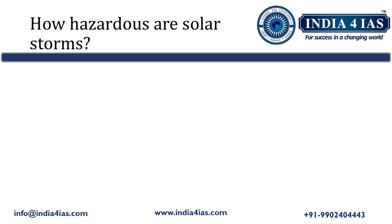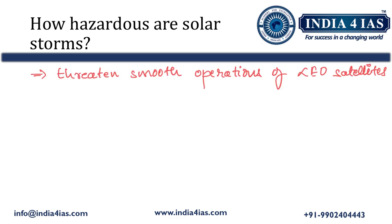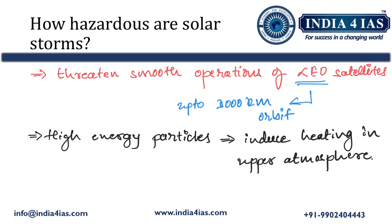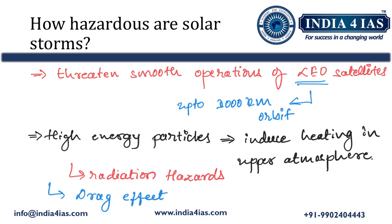Intense solar storms can be harmful. They can threaten the smooth operations of satellites in low Earth orbit — the orbit extending to 1,000 km from Earth's surface — which are used for navigation, military, intelligence, and communication purposes. Earth's satellite-based systems like GPS may be vulnerable to solar storms. Highly energetic particles can induce heating in the upper atmosphere, increasing radiation hazard risks, and also cause a drag effect on low Earth orbit satellites, potentially leading to satellite burnout and complete cessation of operations.